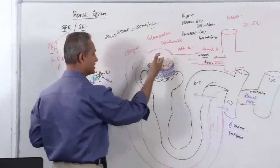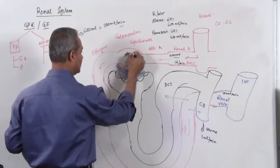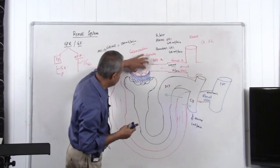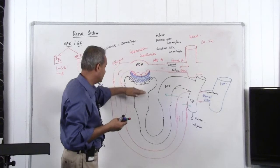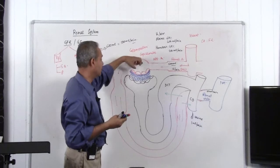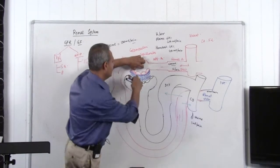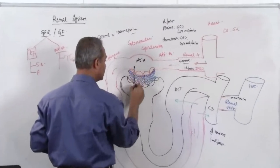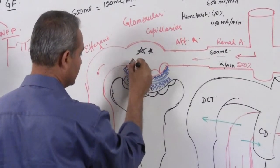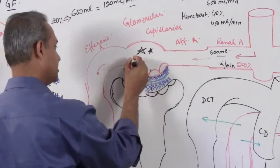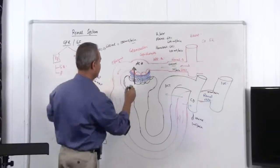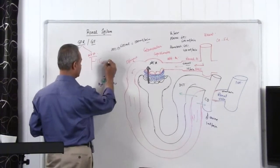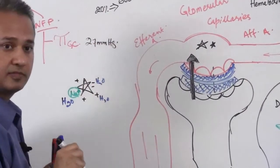When plasma comes into the glomerulus, its proteins exert oncotic pressure. This force acts to keep water inside the capillary — it is a reverse force opposing filtration. The normal value of glomerular capillary oncotic pressure is about 27 millimeters of mercury.